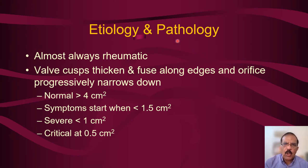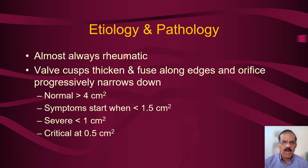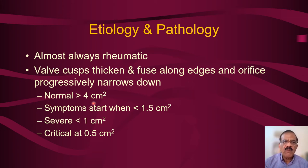Regarding etiology and pathology: mitral stenosis is almost always rheumatic. There is a congenital form — Lutembacher syndrome — occurring with ASD, but 99 out of 100 cases of mitral stenosis you will see in practice will have a rheumatic etiology. The valve cusps thicken and fuse along their edges, and the orifice becomes progressively narrow. A normal valve is approximately 4 cm² and symptoms start when it narrows down to 1.5 cm².